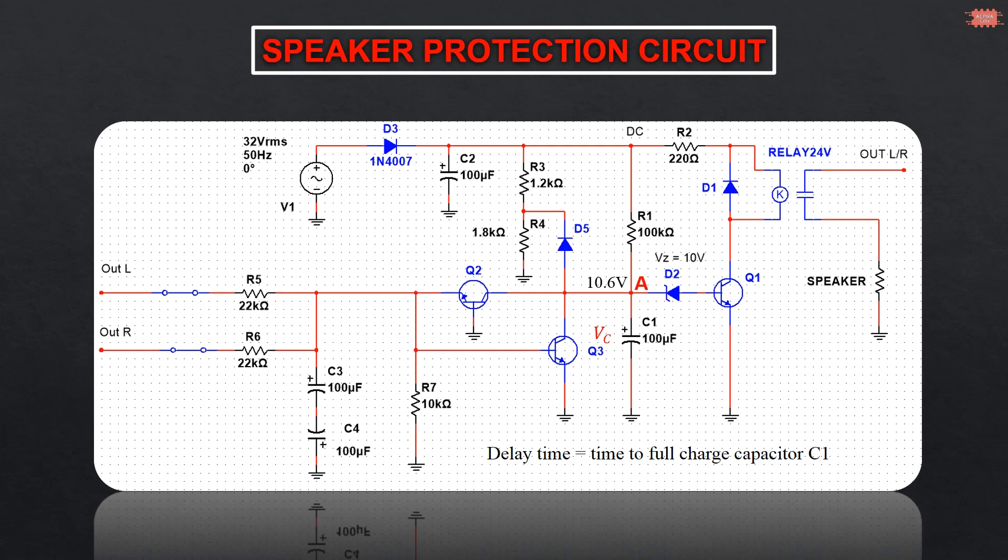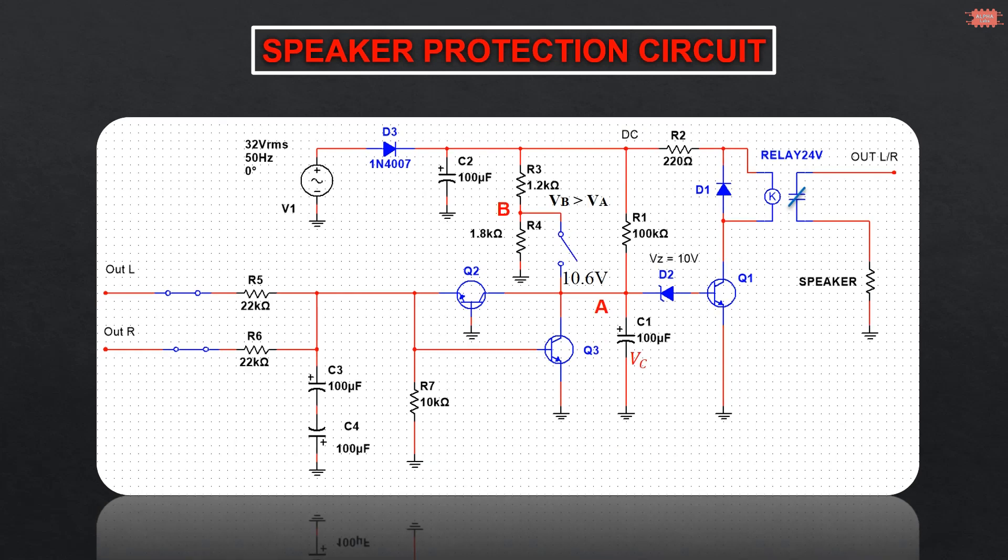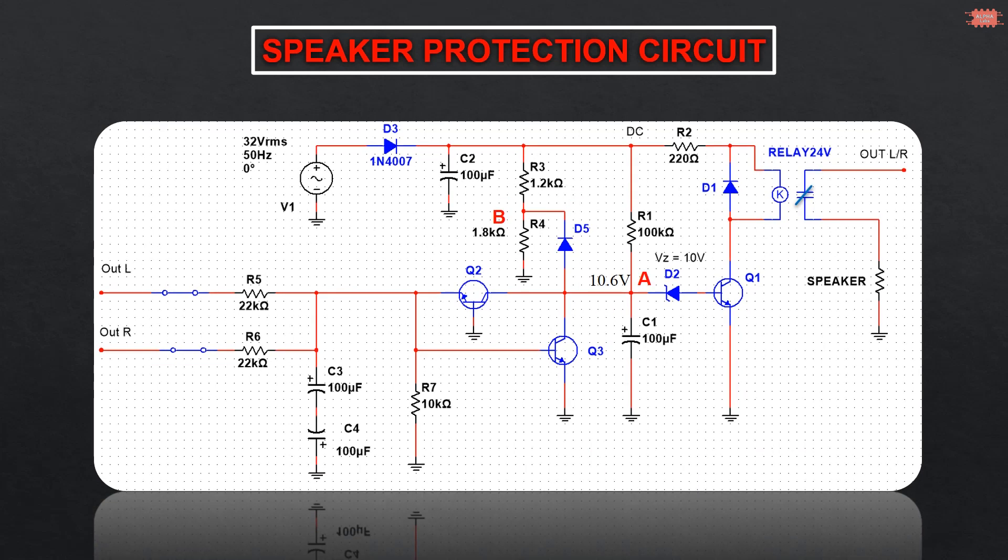Resistor R3 combines with resistor R4 to form a voltage divider circuit. The voltage at point B must be higher than voltage at point A to avoid diode D5 being forward biased. If diode D5 is forward biased, the voltage of capacitor C1 will discharge to ground through D5 and R4.